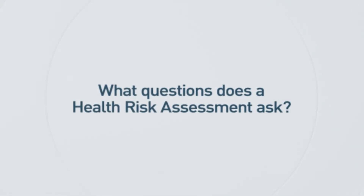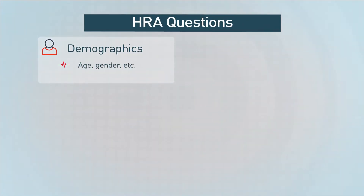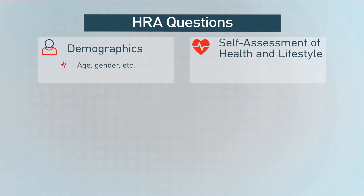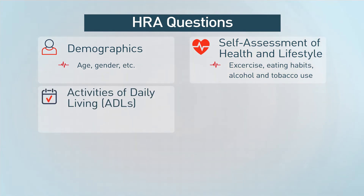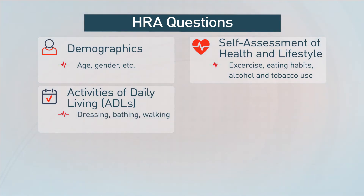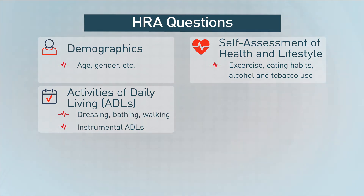So what questions does the health risk assessment ask? An HRA should inquire about demographics such as age and gender, self-assessment of health and lifestyle including exercise, eating habits, and alcohol and tobacco use. It should also include activities of daily living, or ADLs, which include dressing, bathing, and walking, as well as instrumental ADLs like shopping, housekeeping, and medication management.